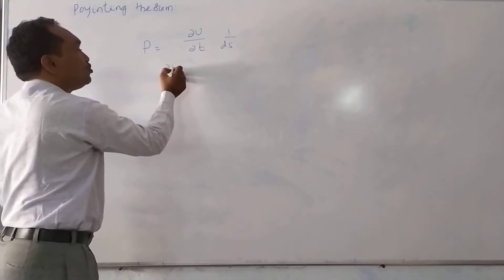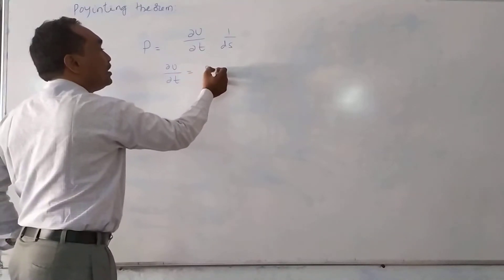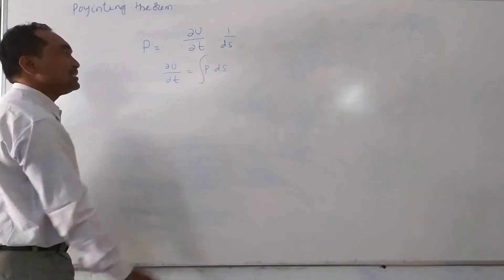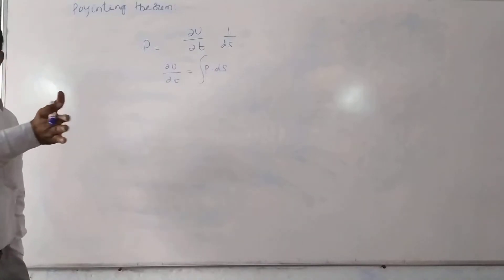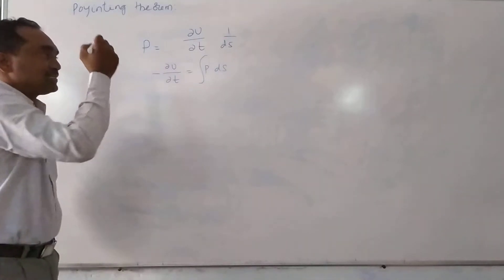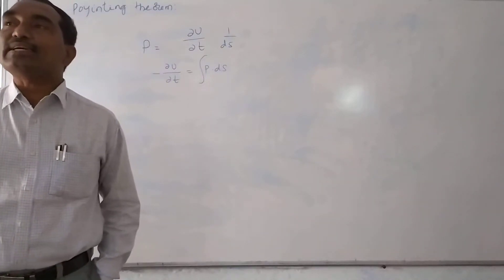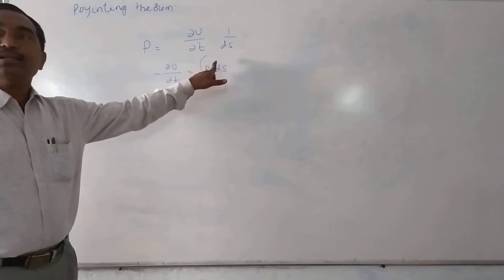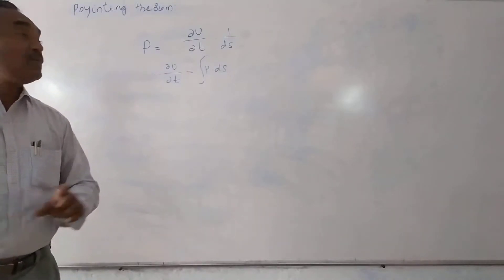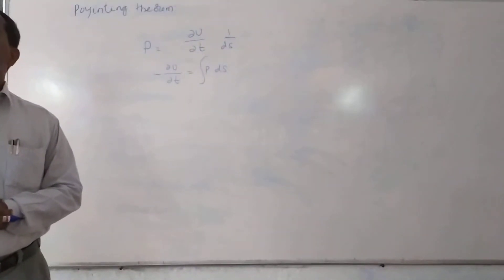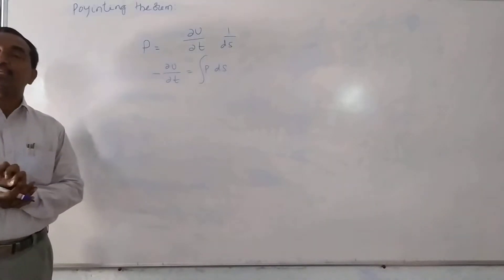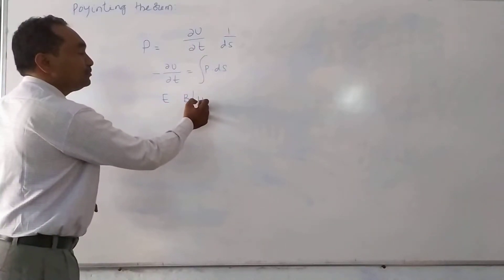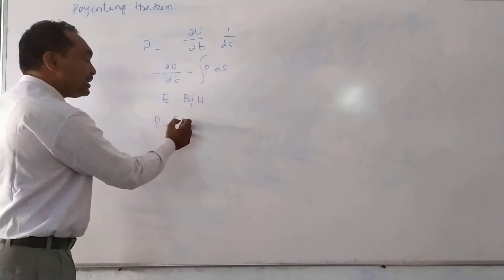So the Poynting vector is equal to the rate of passing of energy per unit area. That is ∂U/∂t is equal to P·dS. If you want the total energy, that can be taken as integration of P·dS. Now our aim is to find the value of P. The value of P depends on the intensity of the electric field E and the intensity of the magnetic field H. The Poynting vector P is equal to E cross H.